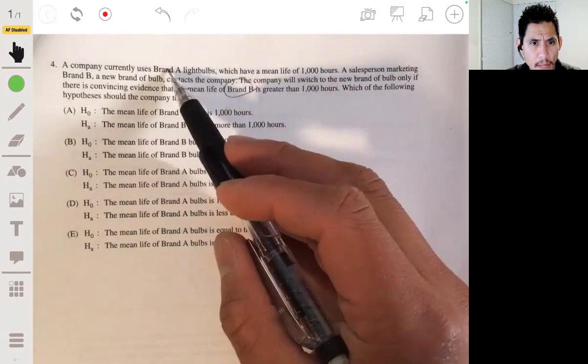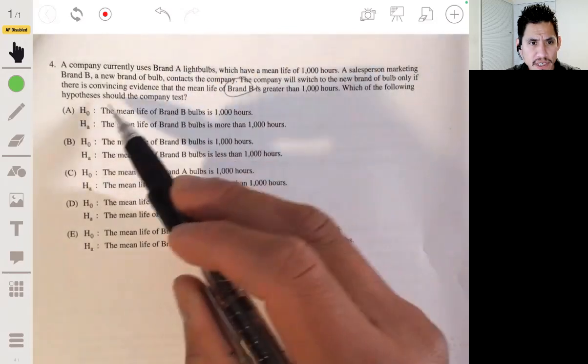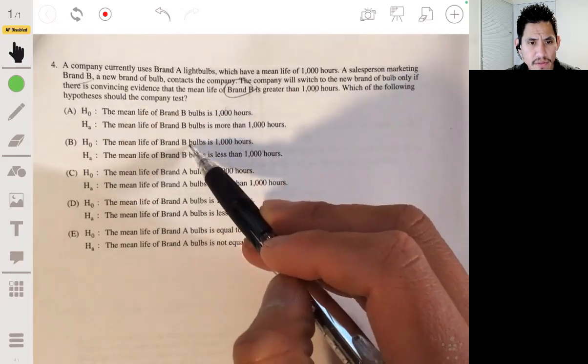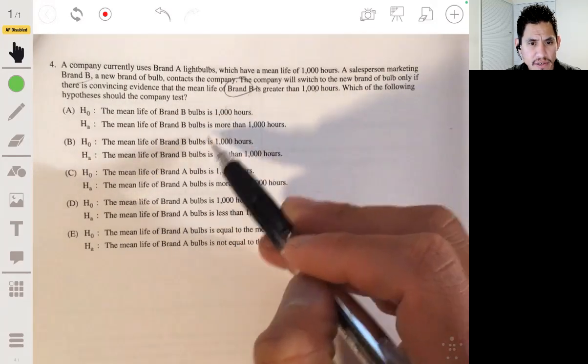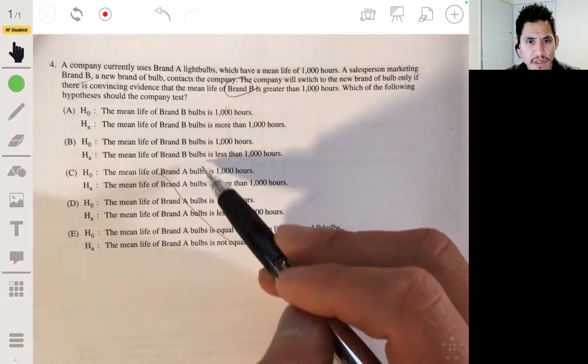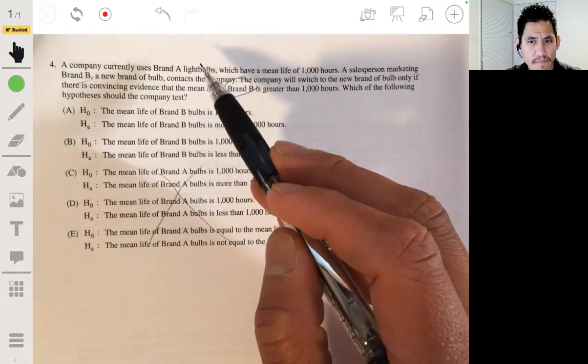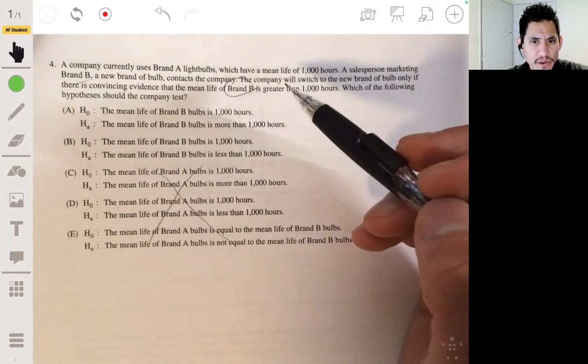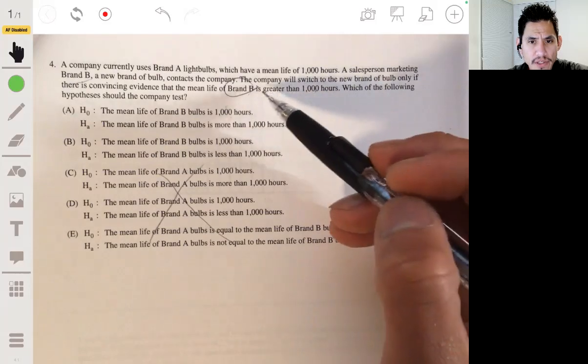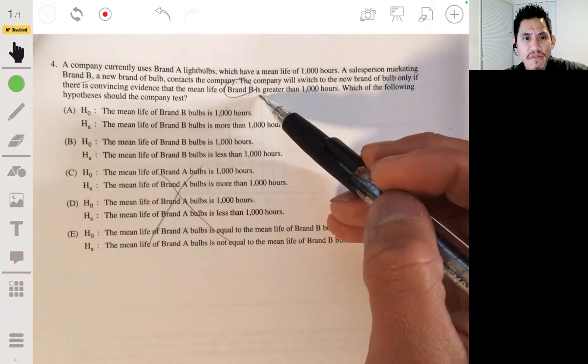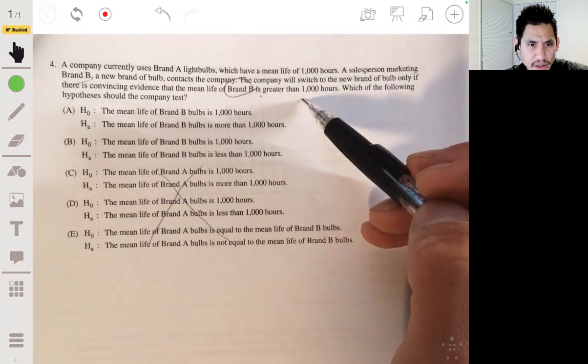So we care about brand B, right? A salesperson is marketing brand B. So brand B, the mean life of brand B is 1,000 hours. So it's not going to be C, D, or E because we don't care about brand A. We're studying brand B. And so then the alternative is that the true mean or the mean life of the brand B bulb is more than 1,000 hours.